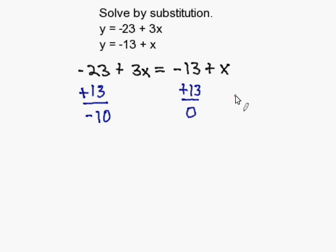Then I'm going to bring the x over to the right side. Subtract 3x from here, and you got to do the same thing on the other side of the equal sign. So now, once I do this, I can simply rewrite my equation. I have negative 10 equals negative 2x.